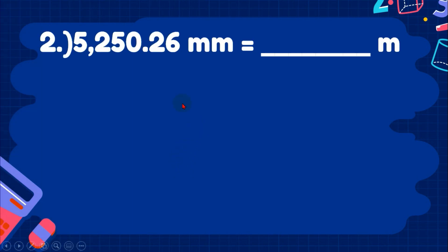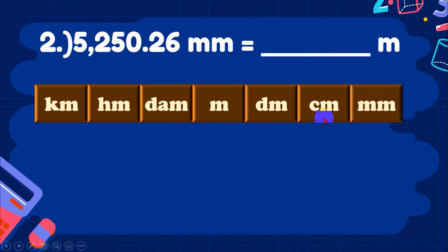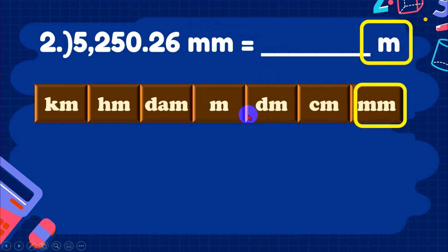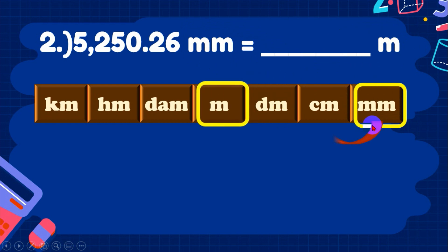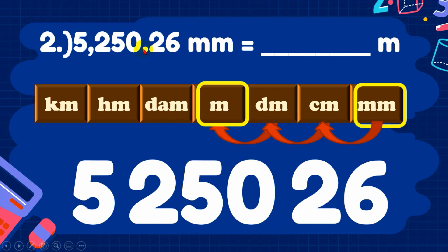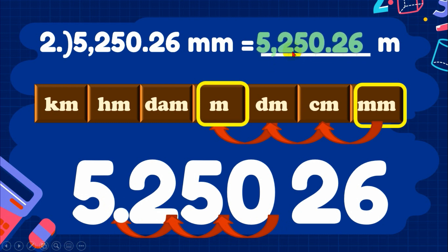Example 2: 5,250.26 millimeters equals how many meters? Using the metric converter, our starting unit is mm. Moving from mm to m is 3 steps to the left. So we move the decimal point 3 places to the left on the number 5,250.26. The decimal moves 3 places left.